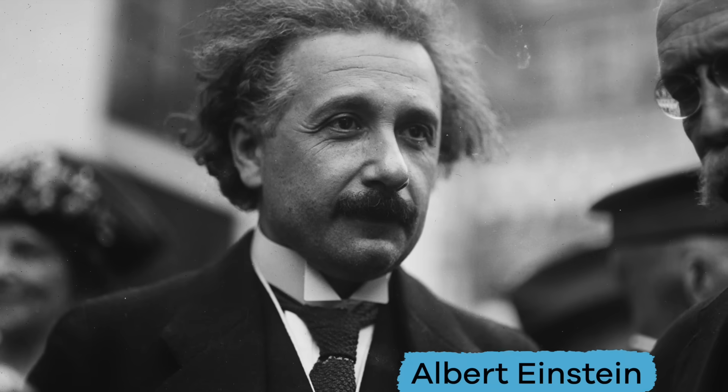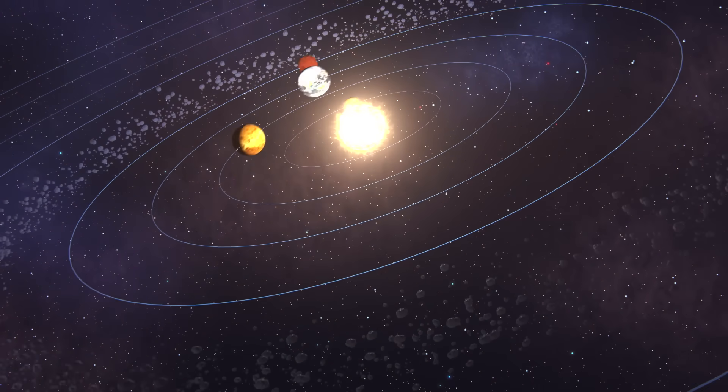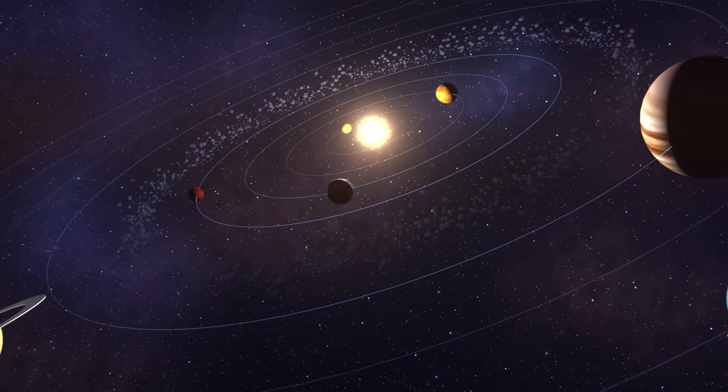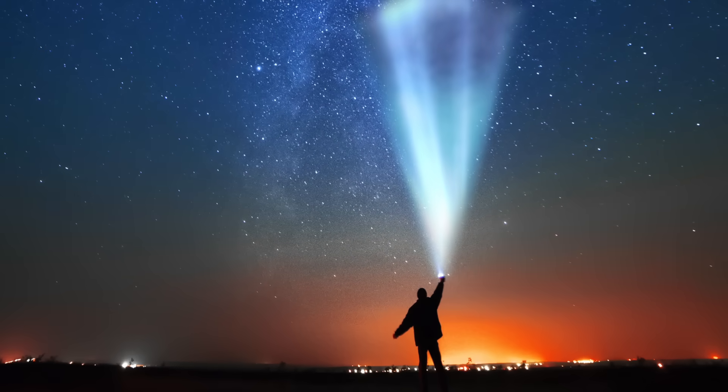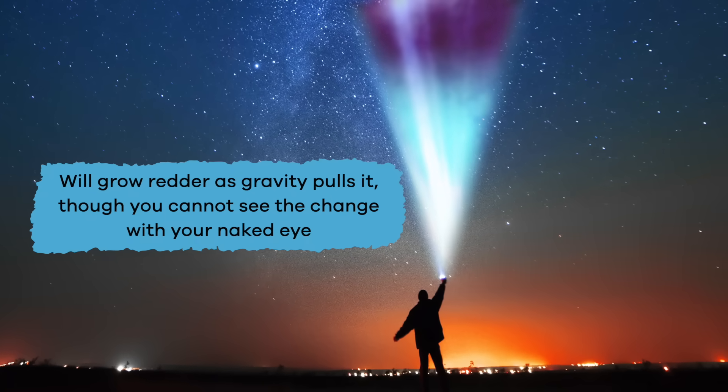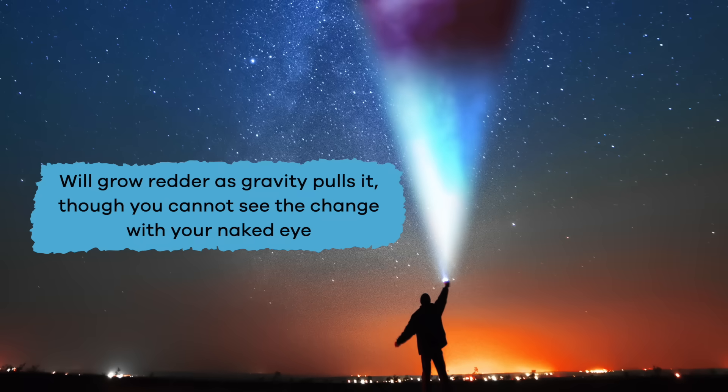Another famous scientist, Albert Einstein, discovered that gravity not only pulls on mass, like a planet, but also on light. A flashlight shined into the air will grow redder as gravity pulls it, though you cannot see the change with your naked eye.